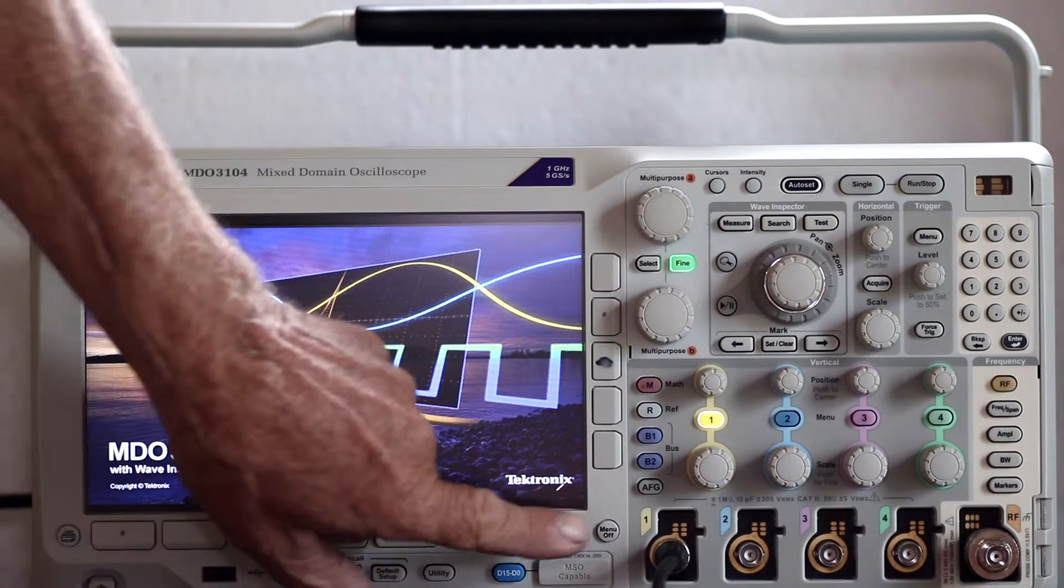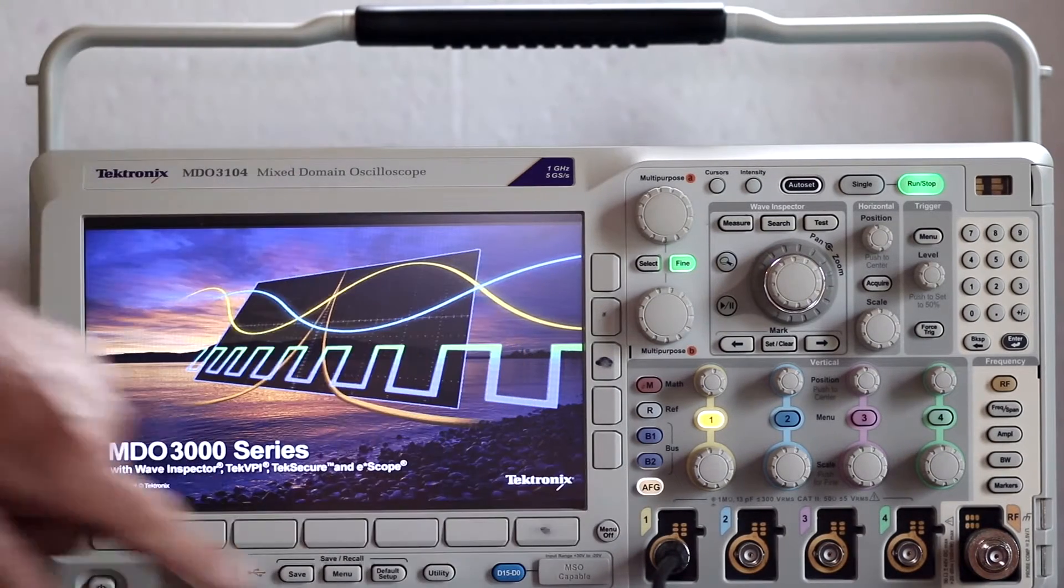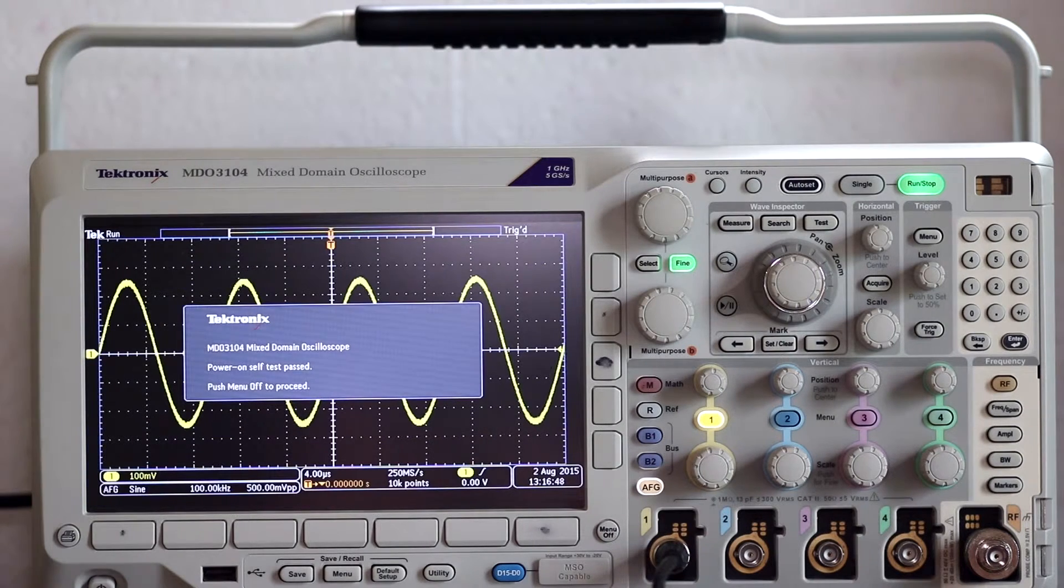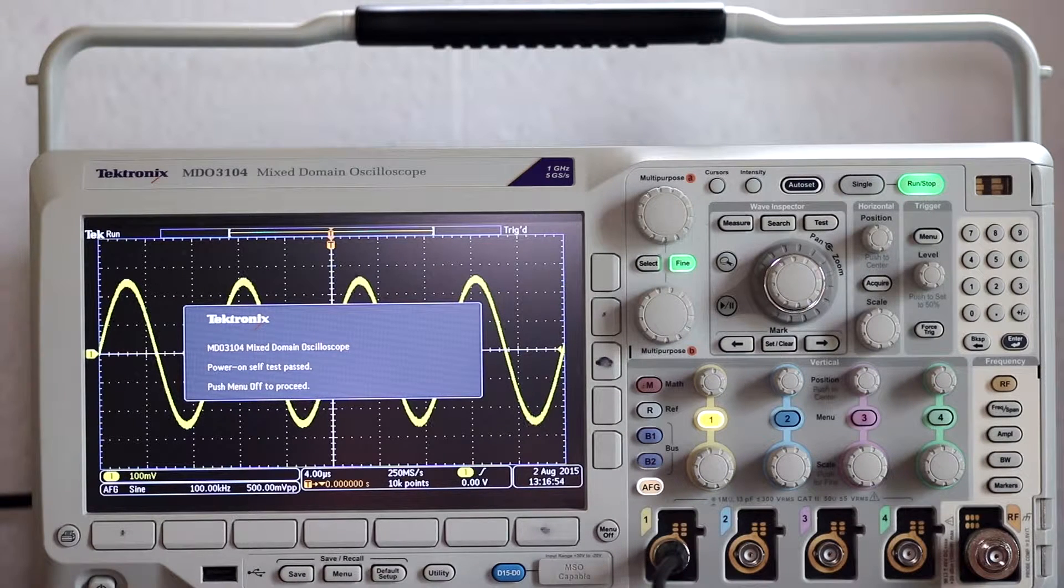Press AFG. Be sure that channel 1 is active. The default sine wave appears unless a different waveform remains from a previous session.